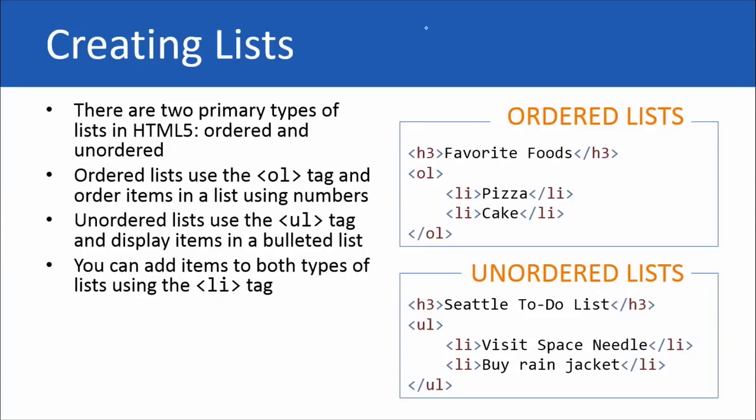It can be a little confusing because you're not going to see one and two there. You're going to see LI, which stands for list item. But do know that it will appear as number one and number two. That's not actually my favorite food list. I just thought everybody would be able to relate to it a little bit more.